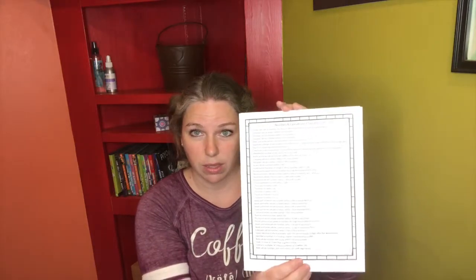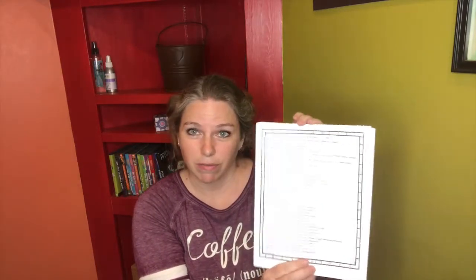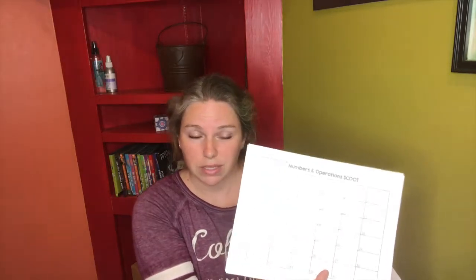Each set of RIT band task cards also comes with the layman's terms of the standards that are covered — like 'create sets with more than, less than, or the same number as a given set of objects' — and it tells you what's included inside that RIT band. It also comes with a numbers and operations recording sheet, which is what I throw in the centers. I throw these in the center so that the kids can do these independently, or they could do them as a whole class or as a scoot. As long as they're practicing these skills, you can find different ways to do that.